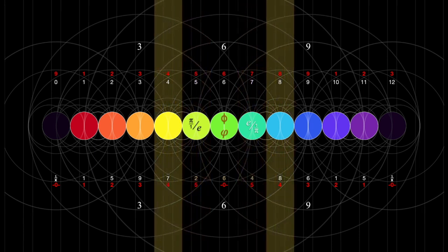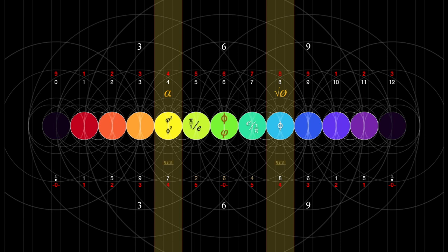The next conjunction manifests the squares of phi, framed by its square root and the fine structure constant, alpha, giving rise to yet another pair of new constants.